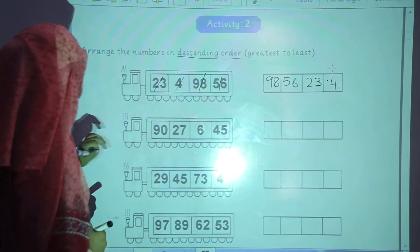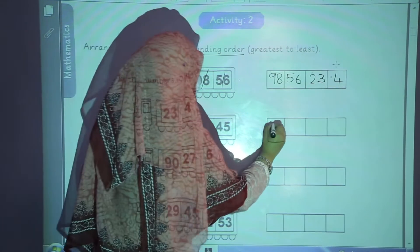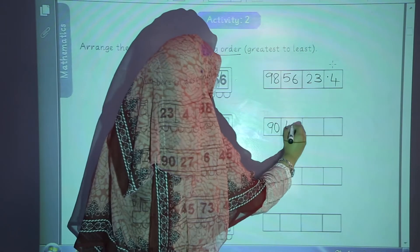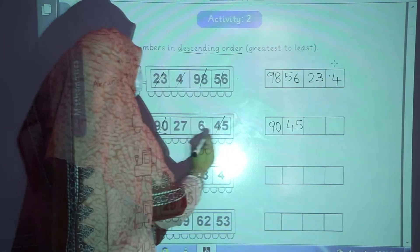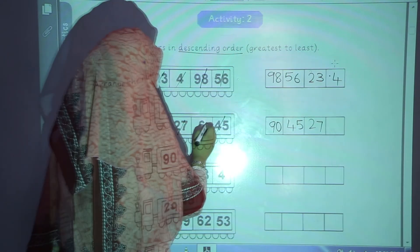Question number 2. Which one is the greatest number here? 90. 90 in the first box. After 90, 45. After 45, 27. After 27, 6.